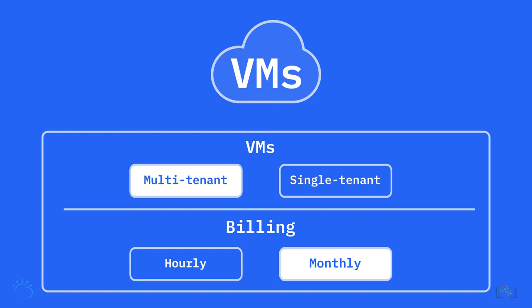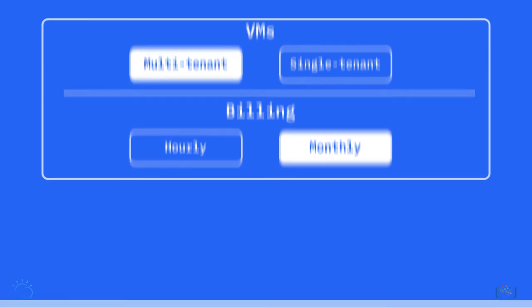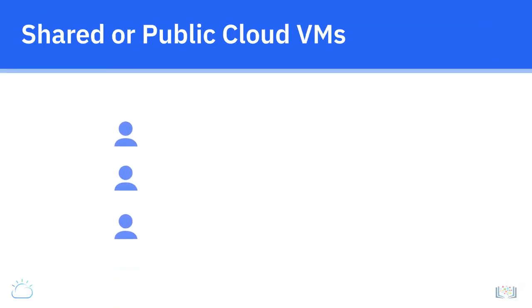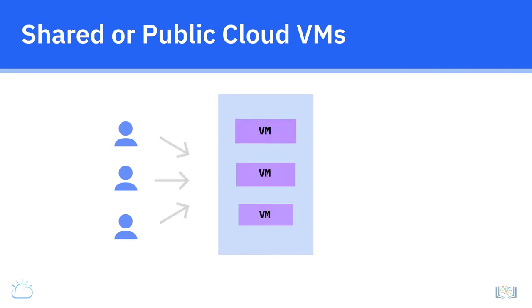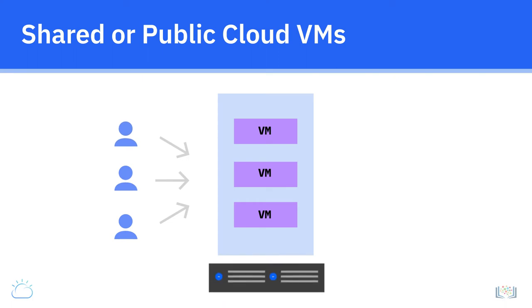Let's look at a few different types of VMs that can be provisioned in the cloud. Shared or public cloud VMs are provider-managed, multi-tenant deployments that can be provisioned on-demand with predefined sizes. Being multi-tenant means that the underlying physical server is virtualized and is shared across other tenants or users.